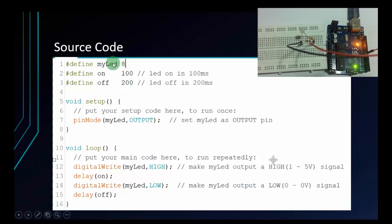Now we have a short code like this. The first line is I define my LED as pin 8. I define ON as 100 - this means the LED will be on in 100 milliseconds. And I define OFF as 200 - the LED will be off in 200 milliseconds. In the setup function, I have pinMode my LED output. This will set my LED as output pin, which means set pin 8 as output.